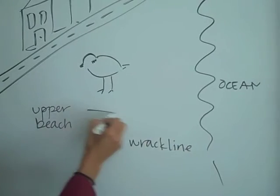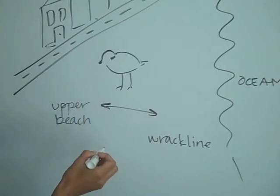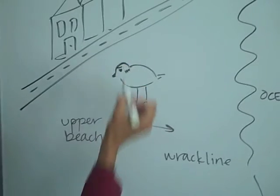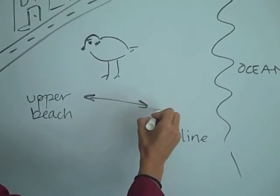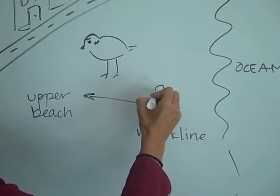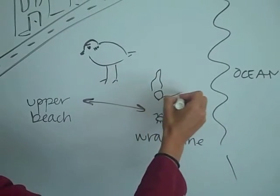So, the plovers kind of move back and forth between this area, and what they're doing, and our plover needs an eye. What they're doing is they're feeding on the invertebrates that eat all that kelp that gets washed up.